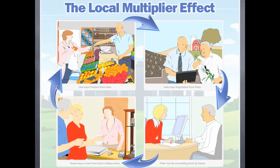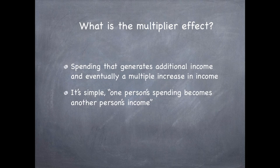In this video lesson, we're going to take a look at the multiplier effect. Lisa buys produce from John, John buys vegetables from Peter, Peter has his accounting done by Susan, and Susan buys a vase from Lisa's antique store. What is the multiplier effect? Spending that generates additional income and eventually a multiple increase in income.